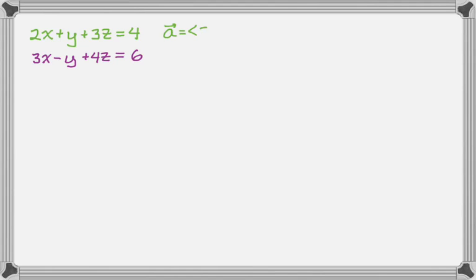So right away, one of the reasons you want to work with planes as much as you can is so that you can just look at them and kind of peel off information. So I know the normal vector to the first plane is 2, 1, 3. And I know the normal vector to the second one is 3, negative 1, 4.